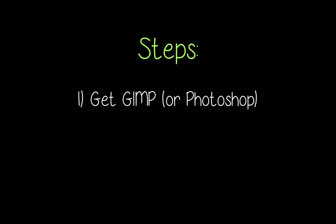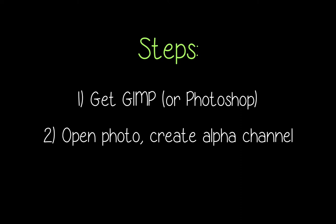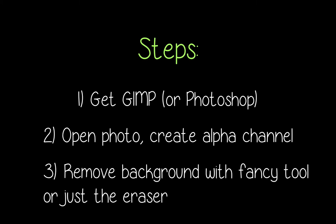Step 1: Get GIMP or Photoshop, or another image processing software — maybe Microsoft Paint does it, I don't know. But GIMP is kind of universal, so we're going to go with that. Step 2: Open up your photo. Create the alpha channel. Make sure the background is going to be transparent when you erase it. Step 3: Remove the background with the fancy tool or just the eraser.